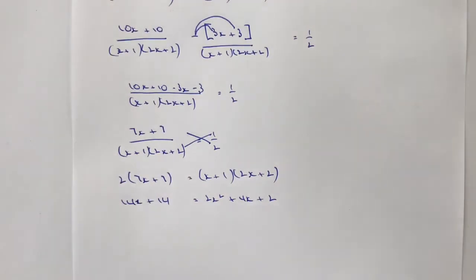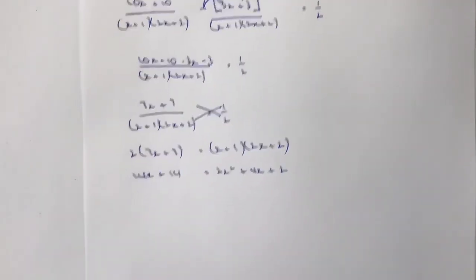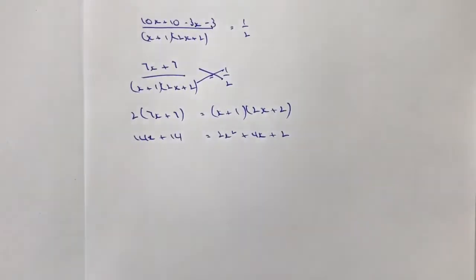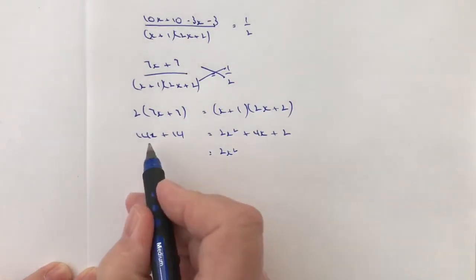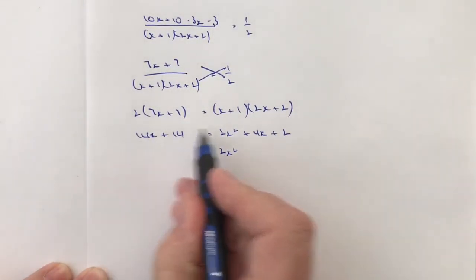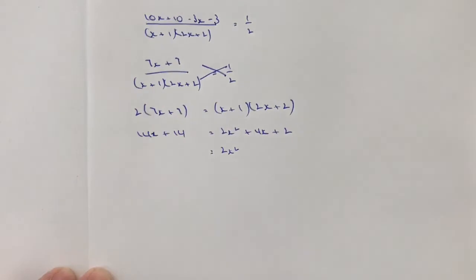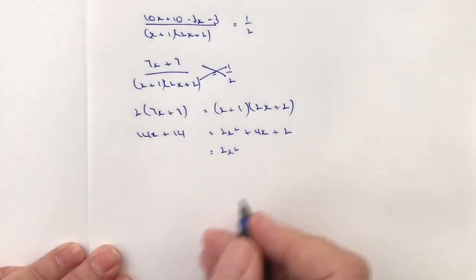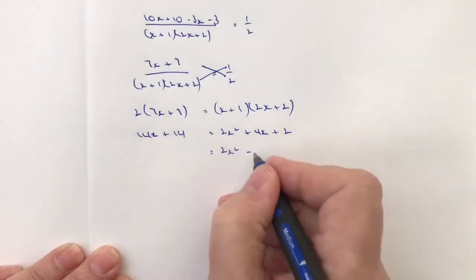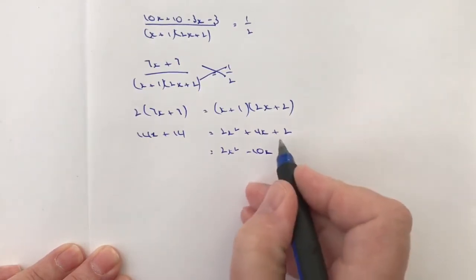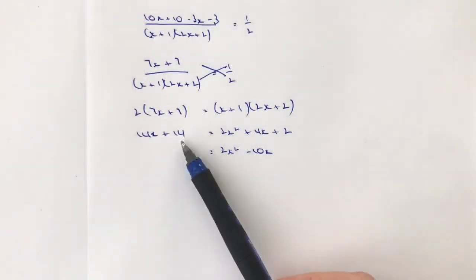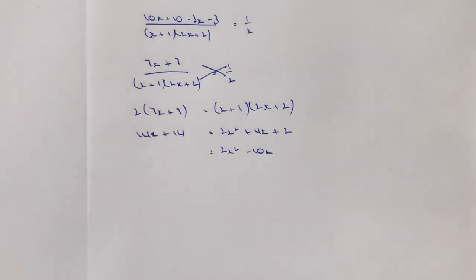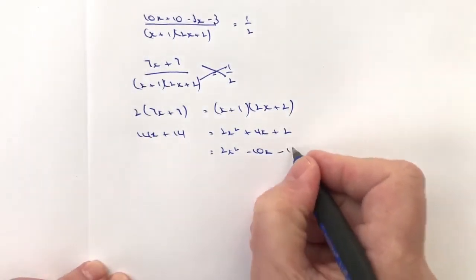Let's make now that equal to 0 and I think we're getting to the point where we should be able to solve it relatively easily now. So if I make it equal 0, 2x squared is fine, but I've got 14x here that I'm going to bring over to this side. I've already got 4x, so 4x minus 14x is going to be minus 10x and then I've got plus 2 and I'm going to bring that 14 over and that's going to give me minus 12.